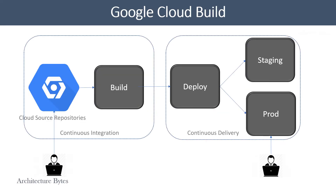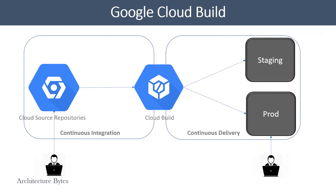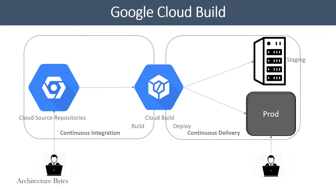The source could be a Google Cloud Source Repository, which is a Git repository, or it could be an external repository like GitHub. Cloud Build is a managed service which executes tasks as defined in a build config file — we will look at that in more detail in a moment. It can build and deploy applications to various environments.